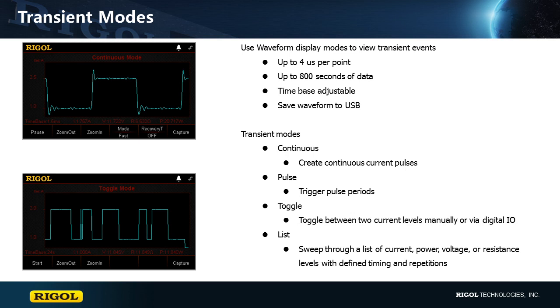Continuous, Pulse, which allows a single trigger per pulse period, and Toggle, which is a trigger per state change. The most complex option is list mode.